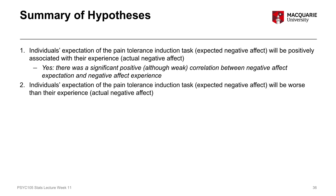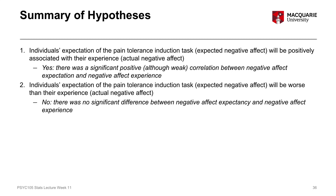Our second hypothesis was the paired T-test, looking at the difference between people's expectations of pain — thinking that would be worse than their actual experience of pain — and that hypothesis wasn't supported. There was no significant difference between people's expectations and actual experience of pain.